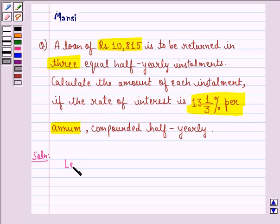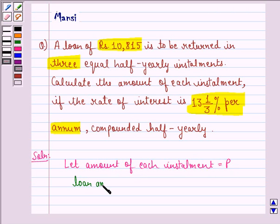Let amount of each installment be equal to P. Loan amount S is equal to rupees 10,815. That is given to us in the question.